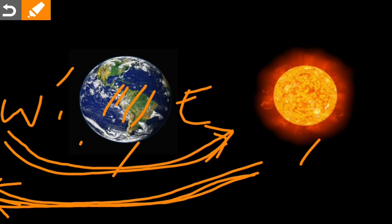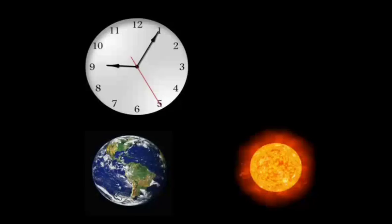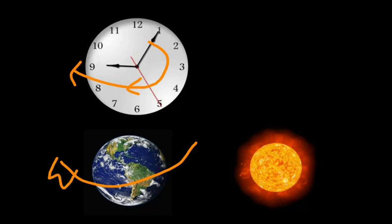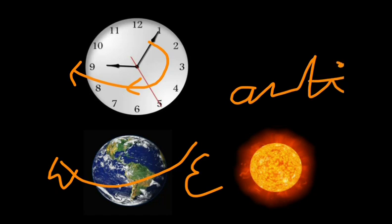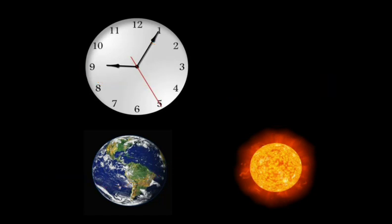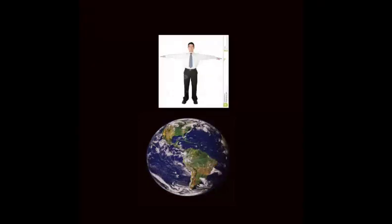Now, is this direction clockwise or anticlockwise? As you know, the movement of the hands of the clock goes in one direction, but the direction of rotation of the Earth is from west to east, which is opposite to the movement of clock hands. So the direction of rotation of the Earth is anticlockwise.